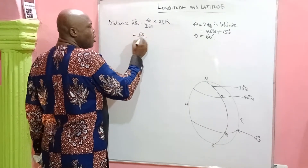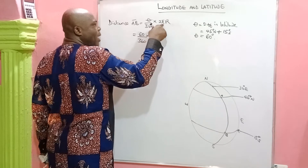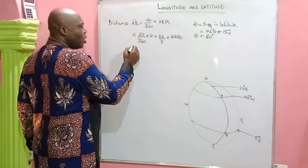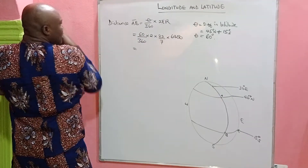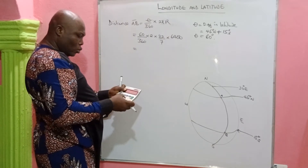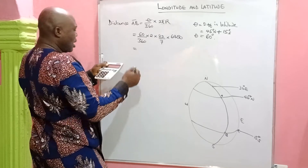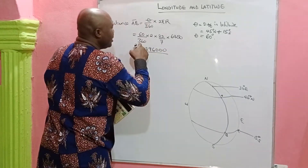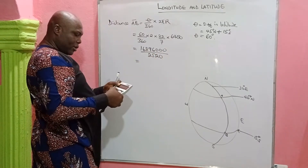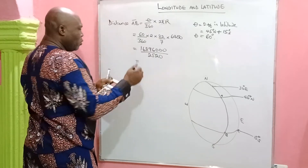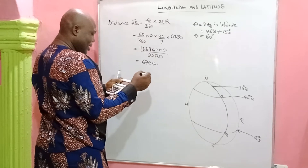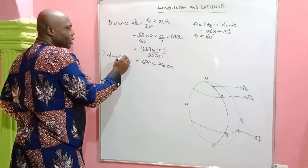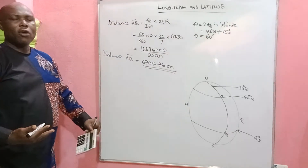Applying the formula, we have 60 over 360, times 2, times 22 over 7, times 6,400 kilometers. Multiplying: 60 times 2 times 22 times 6,400 gives 1,689,600. Divided by 360 times 7, which is 2,520. This gives us 6,704.76 kilometers. So the distance from A to B is 6,704.76 kilometers.